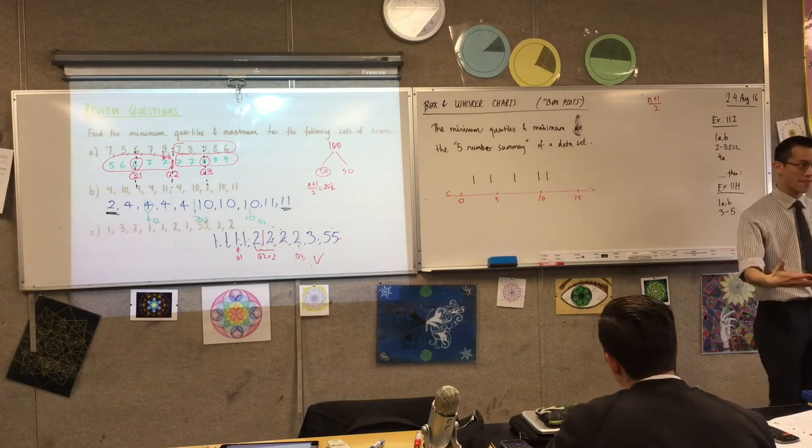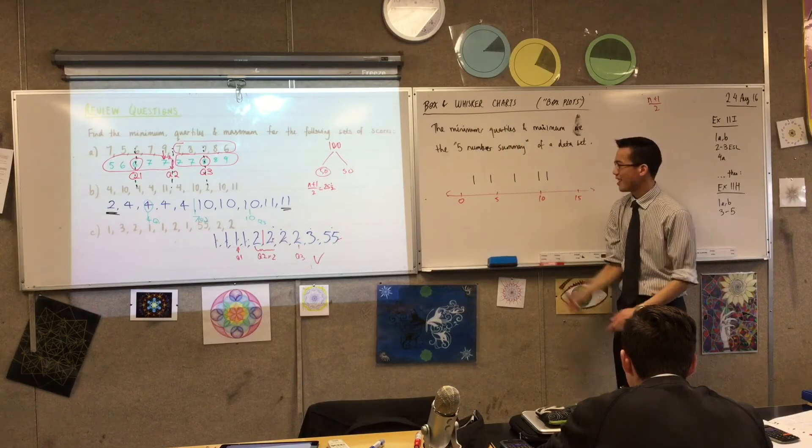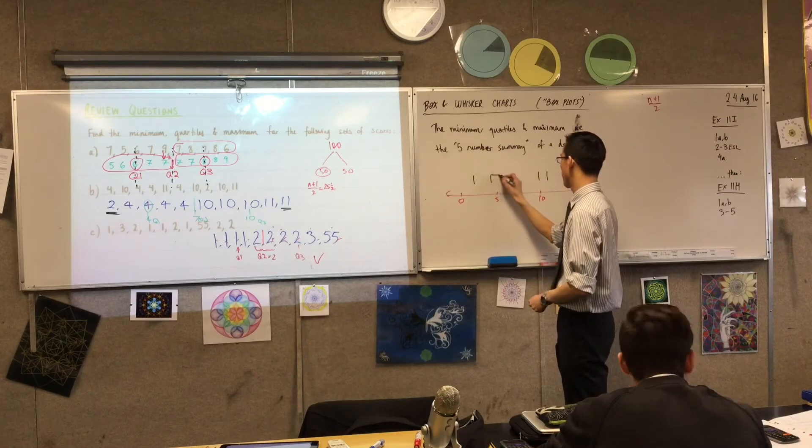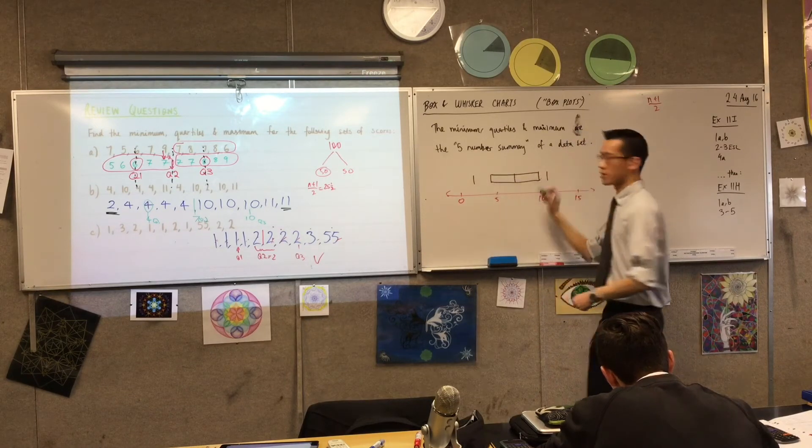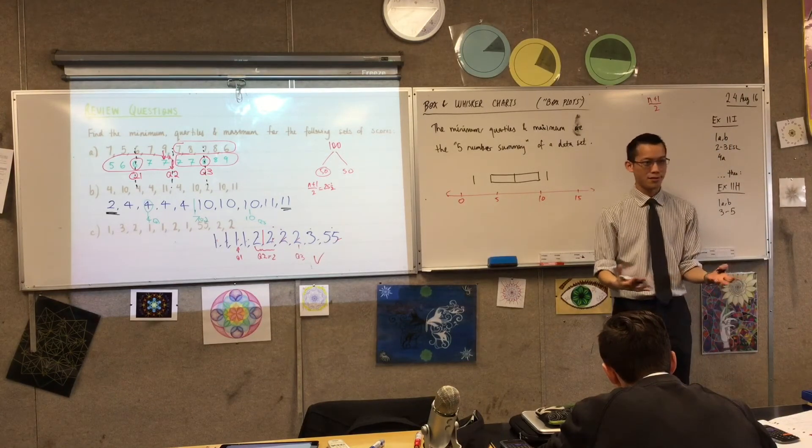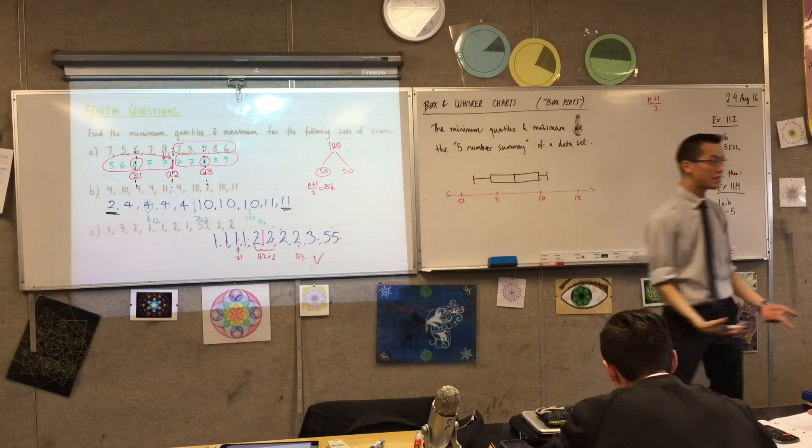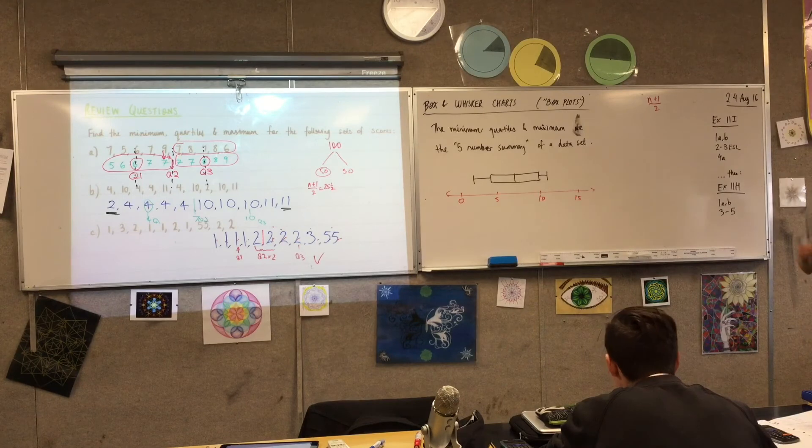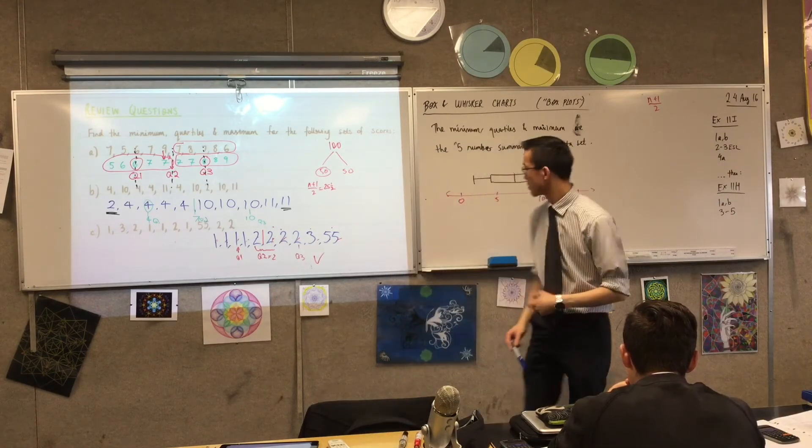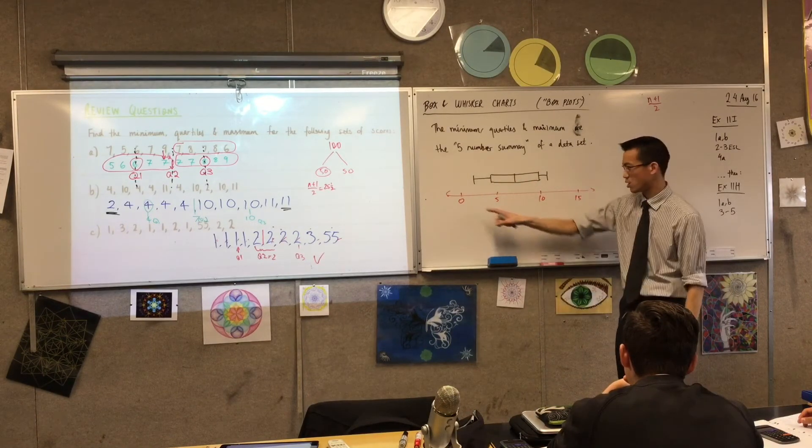To turn this into a box and whisker plot, you look at the middle three and you draw a box around them. So there's the box in a box and whisker plot chart. And then to make the whiskers, in the middle, I'm going to draw one line like this. And there's your graph.